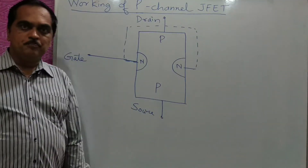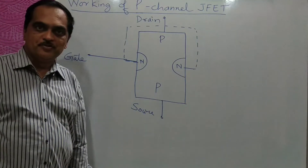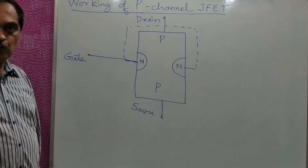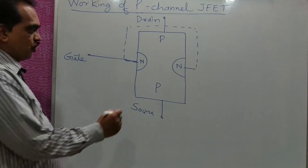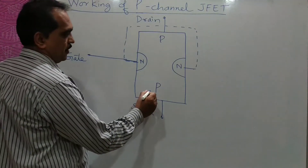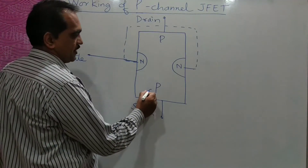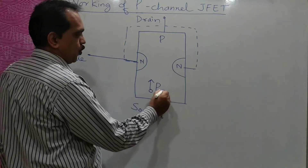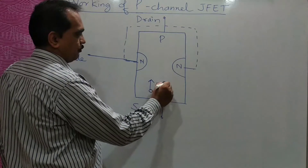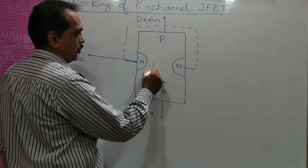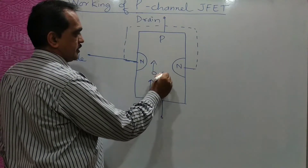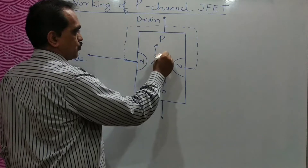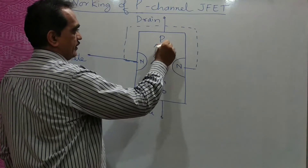Now because it is a p-type semiconductor, the current which is flowing is because of the majority charge carriers — holes. Holes are going to flow from source to drain.